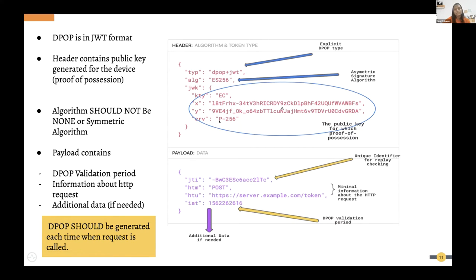The server then performs endpoint validation — checking whether the DPoP was generated for the correct API endpoint, since the DPoP contains that API information. This helps mitigate replay attacks because you cannot reuse the same DPoP again and again, as all these values are validated.